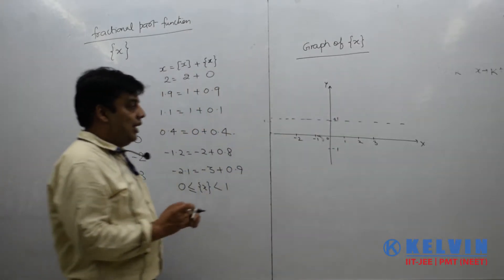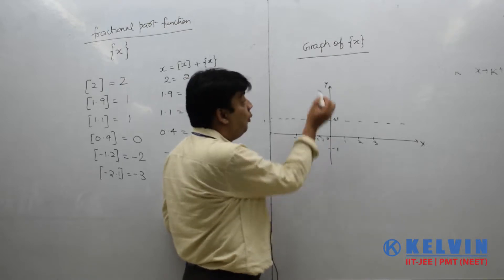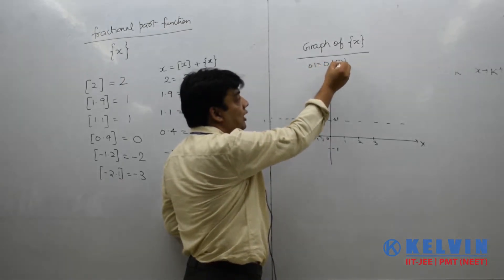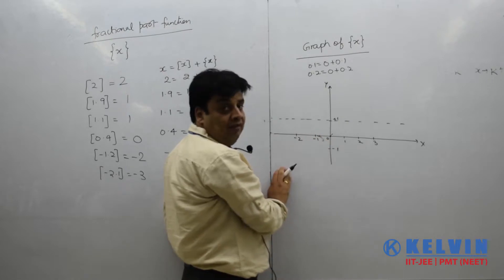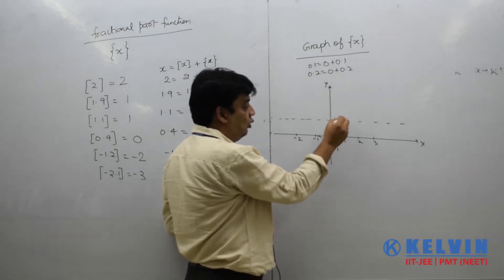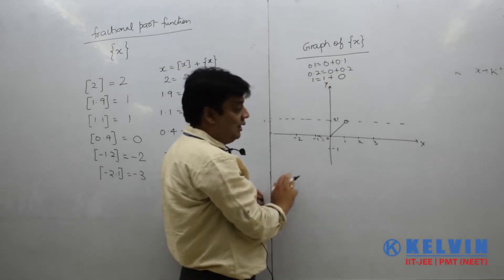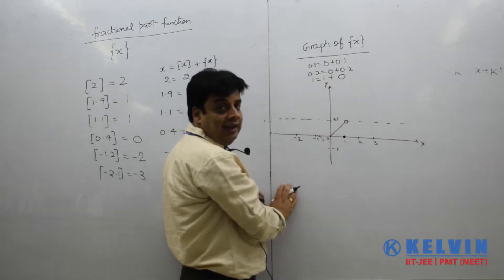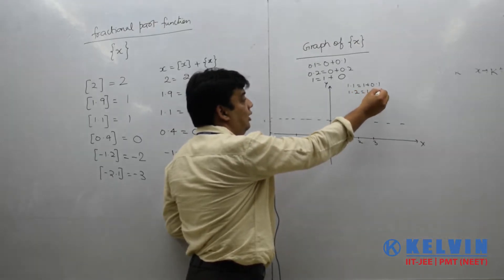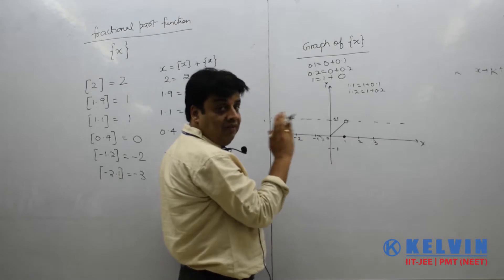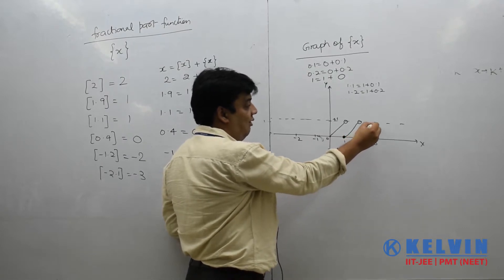Let us plot the graph. Fractional part of 0 is 0. Fractional part of 0.1 is 0.1, because 0.1 = 0 plus 0.1, and 0 is the integral part. Similarly, 0.2 has fractional part 0.2, 0.3 has 0.3 — so it is a straight line like y equals x. As x approaches 1, there is an open circle at that end. Fractional part of 1 is 0, because 1 = 1 plus 0. So at x = 1, the graph drops back to 0. Then 1.1 has fractional part 0.1, 1.2 has 0.2 — the same line repeats, shifted. At x = 2, fractional part is again 0, and the pattern continues the same way.